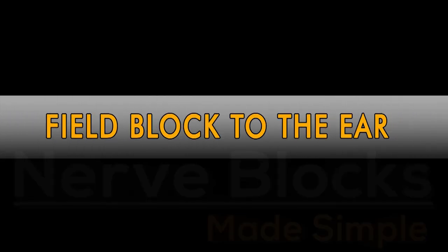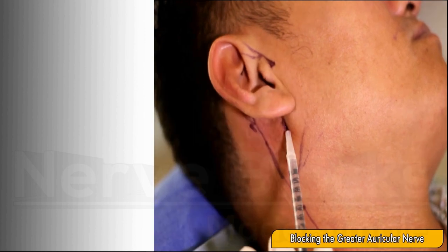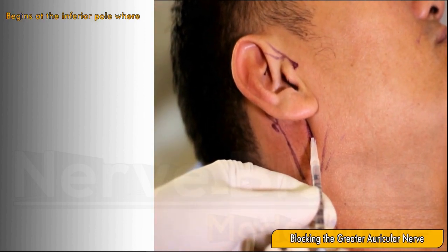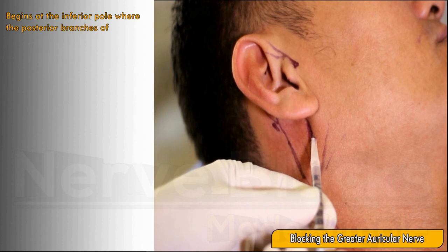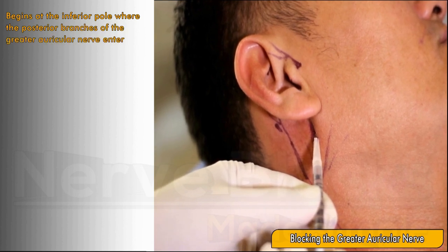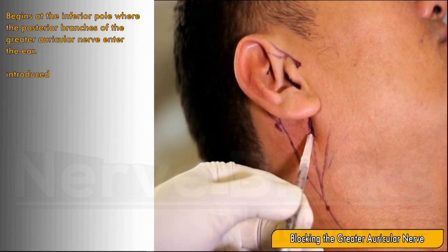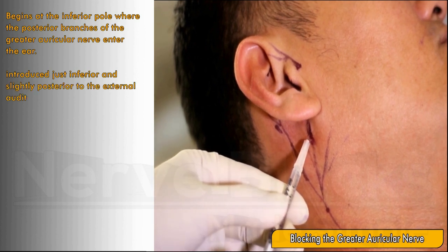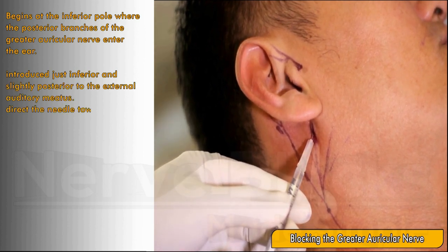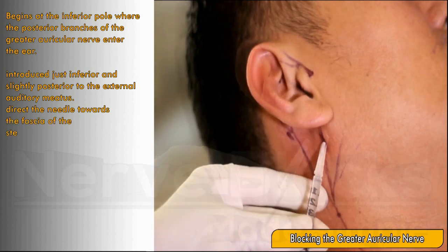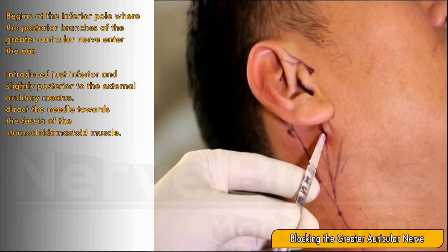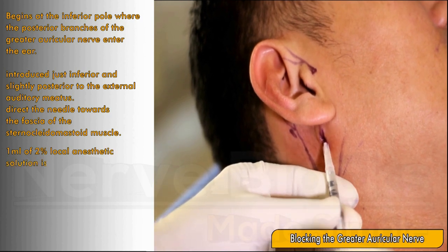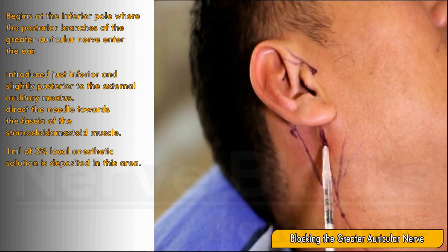Field block to the ear. Blocking the greater auricular nerve: begin at the inferior pole where posterior branches of the greater auricular nerve enter. Introduce the needle inferior and slightly posterior to the external auditory meatus, directing it towards the fascia of the sternocleidomastoid muscle. 1 ml of 2% local anesthetic solution is deposited in this area.